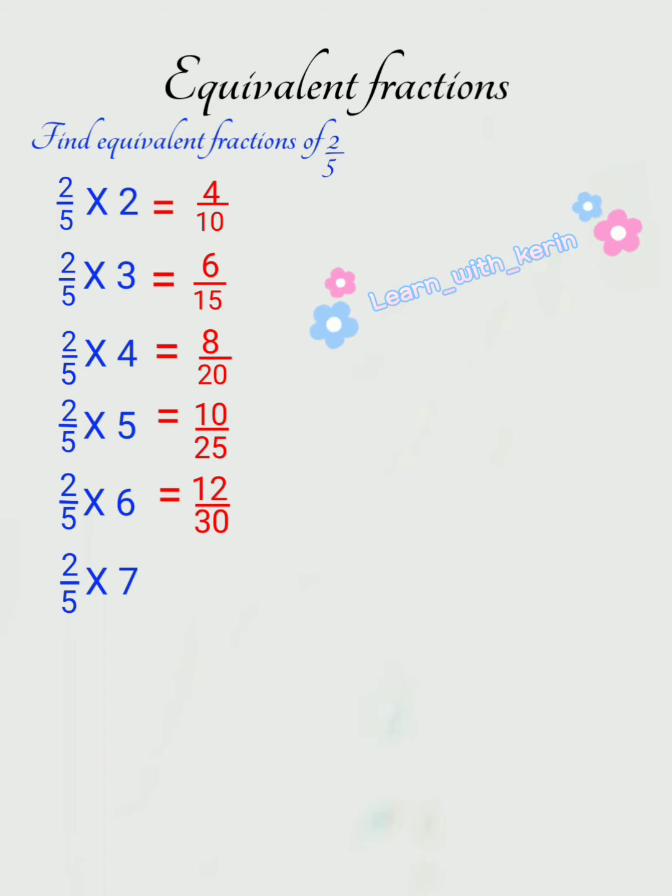Next, we will multiply 2 by 5 with 7. 2 7's are 14, 5 7's are 35. So, our last equivalent fraction is 14 by 35.